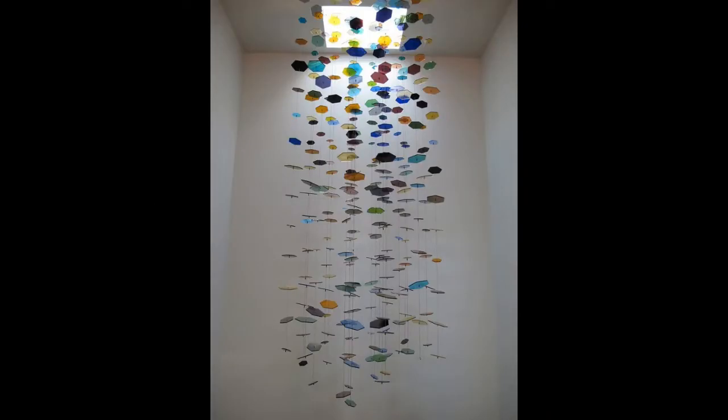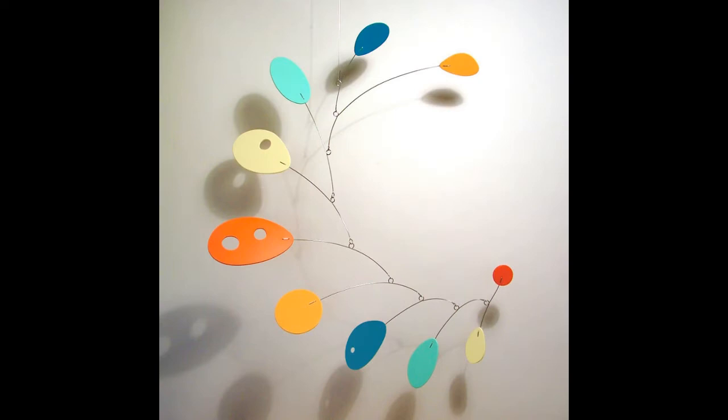For our next project, we are going to be creating a mobile. Here we have a few examples of mobiles that artists have made. As you can see, they are hanging pieces of art. And what's really cool is that you can use all kinds of materials and they can make really cool shadows and lots of beautiful colors.